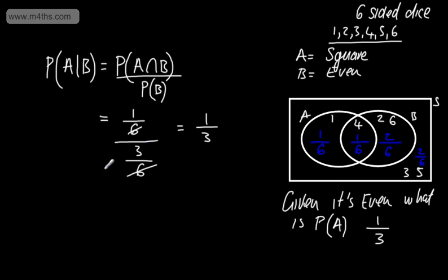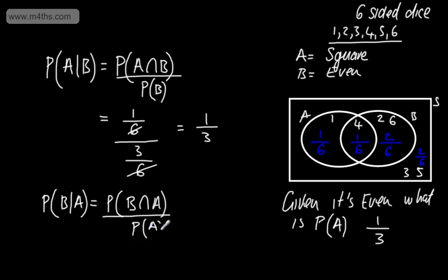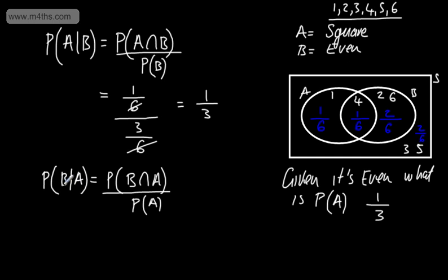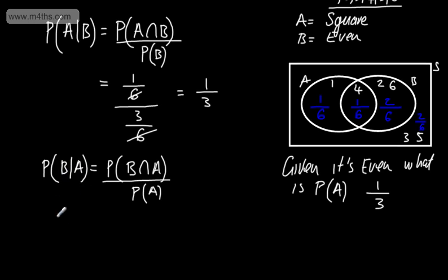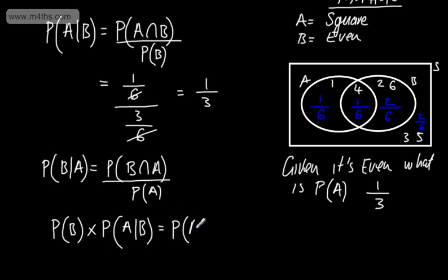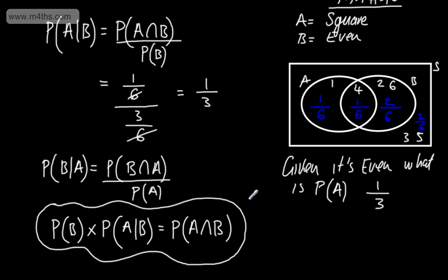We can also write this the other way around: the probability of B given A equals the probability of B intersection A divided by the probability of A. In general, P(A|B) is not equal to P(B|A). From this, we can derive the multiplication law: P(B) multiplied by P(A|B) equals P(A ∩ B). We can also note that for independent events, P(A|B) equals P(A).